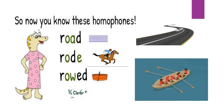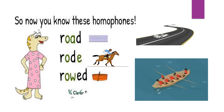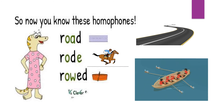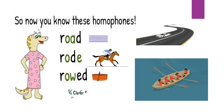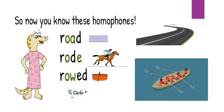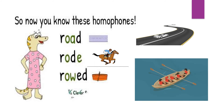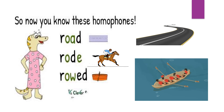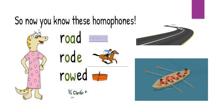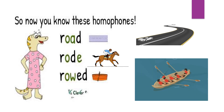Now you know these homophones! Let's check one final example. Here you can see three words with different spellings. The first word is Road, R-O-A-D, which means sadak. The next word is Rode, R-O-D-E, which means savari karna or yatra karna. The last word is Rowed, R-O-W-E-D, which means nav chalana or nauka chalana. All three words have different meanings and spellings but when we pronounce them they sound similar. Children, I hope you have understood what homophones are. Bye for now, keep learning, keep growing!